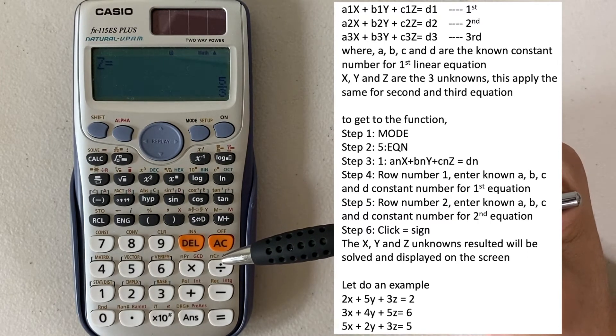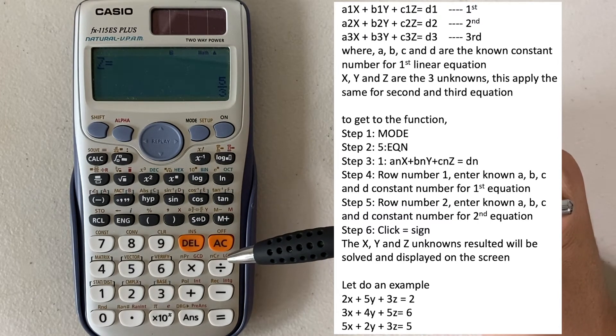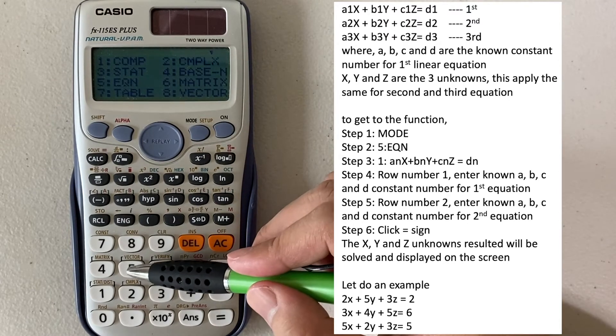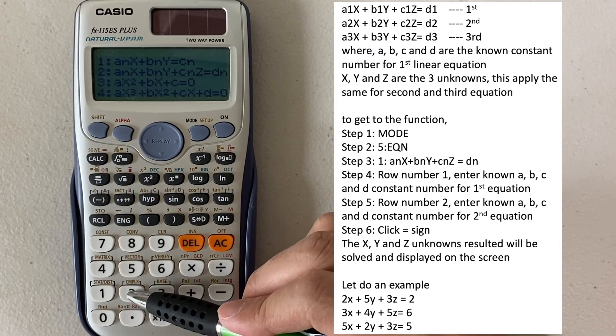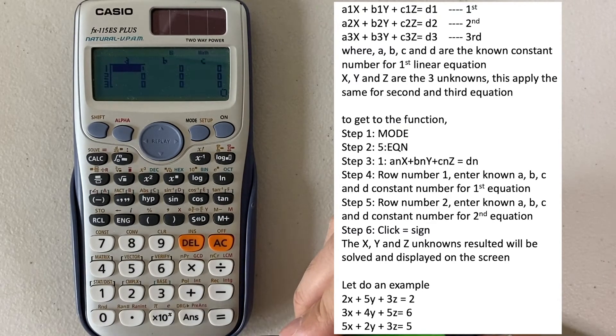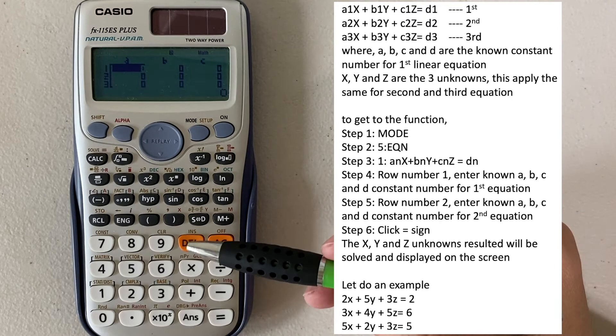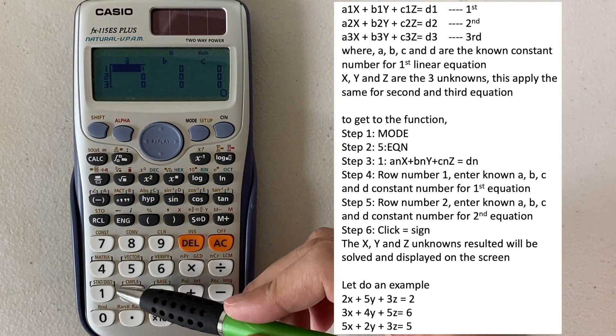Let's do an example here. In order to go back, just press mode and then number 5. And here again, select number 2. So here we have the first linear equation: 2X plus 5Y plus 3Z equals 2.